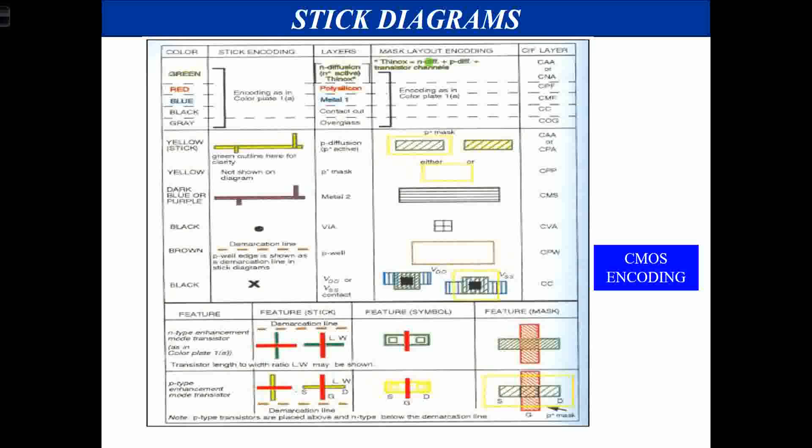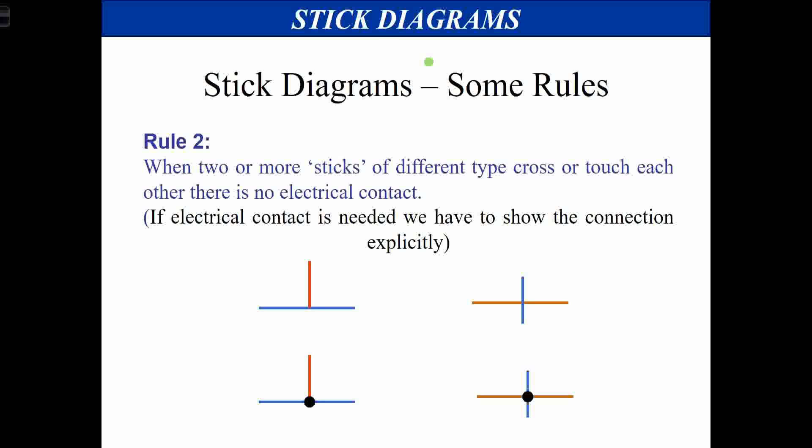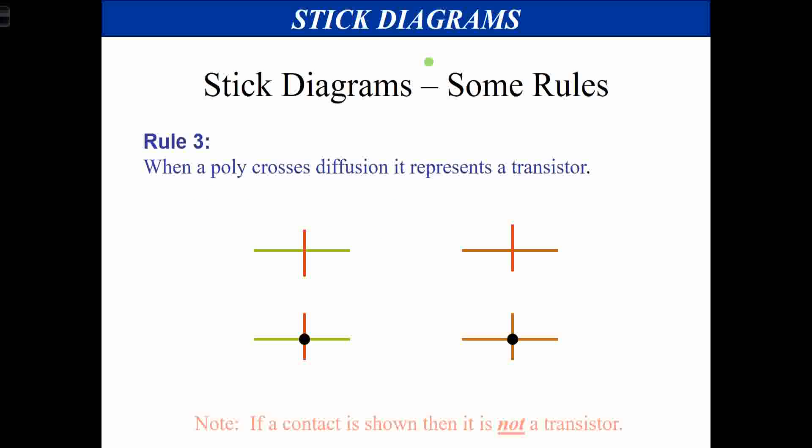Now for stick diagram rules: when two similar sticks cross one another, that shows an electrical contact — for example, blue crossing blue or polysilicon crossing polysilicon indicates electrical contact. When two or more sticks cross and you want to show a connection, you need a contact cut. If they are simply overlapping, that shows no electrical contact.